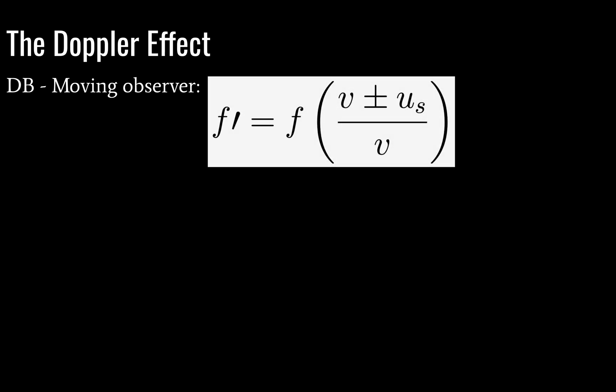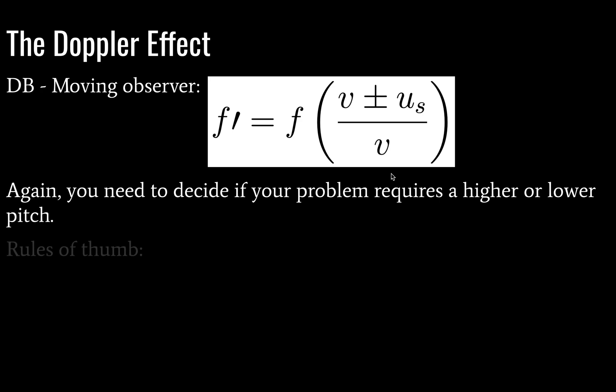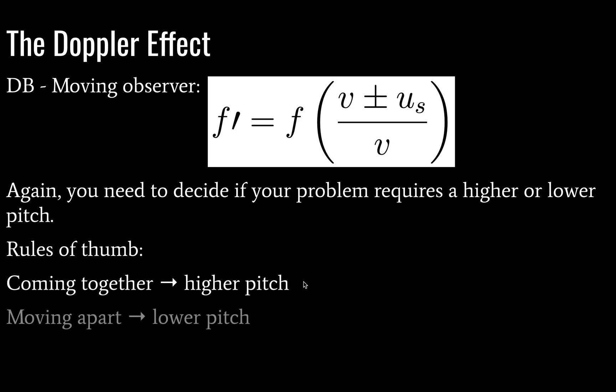Okay, so for the data booklet, a moving observer is given by frequency f prime is equal to the frequency of your object, stationary, multiplied by the quantity, the velocity of sound in air, plus or minus the velocity of the object, divided by, again, the velocity of sound in air for a stationary object. Okay, and you need to decide if your problem requires a higher or lower pitch. Just to be very explicit about this, your rule of thumb is coming together gives a higher pitch. Moving apart gives a lower pitch. Very straightforward.